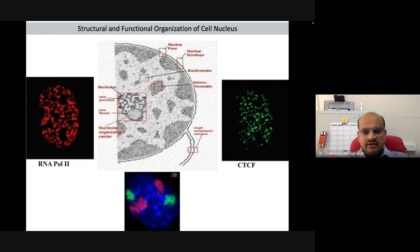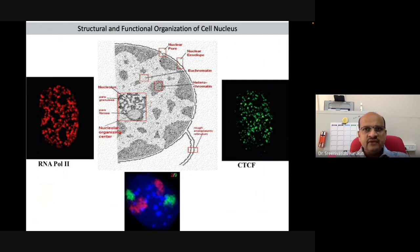A lot of studies conducted subsequent to these observations, with the help of immunofluorescence and molecular tools, have given us more understanding of what these nuclear foci are. These foci are now referred to as nuclear bodies or nuclear compartments — meaning each protein forms a more or less unique set of intranuclear compartments.